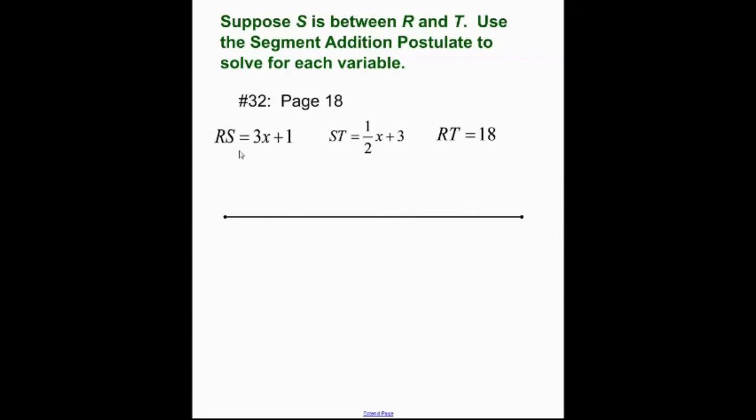What we have here is RS equals 3x plus 1, ST equals 1 half x plus 3, and RT equals 18. Now the key part of this problem is right up here where it says suppose S is between R and T. S has to be between it, that means it lays on the same line or segment.